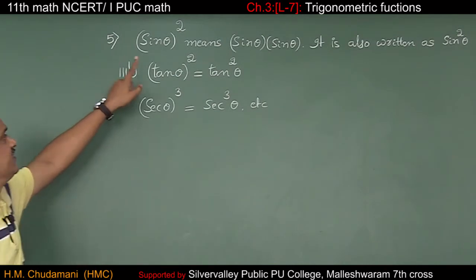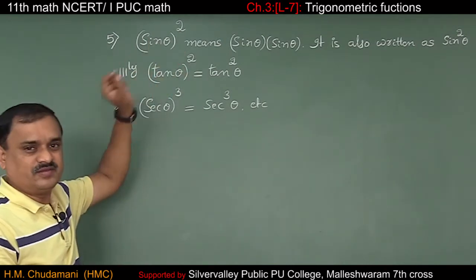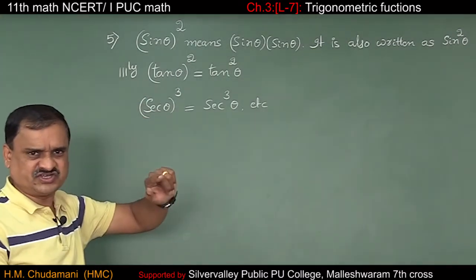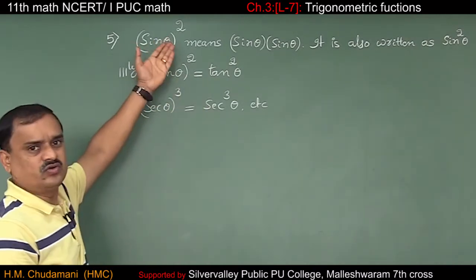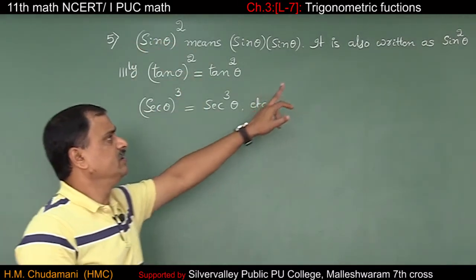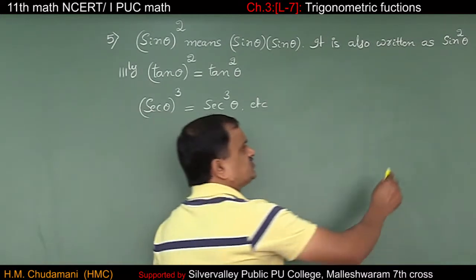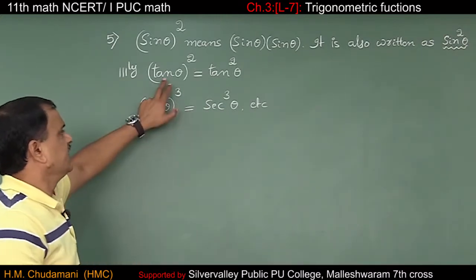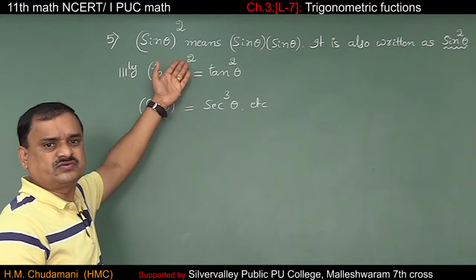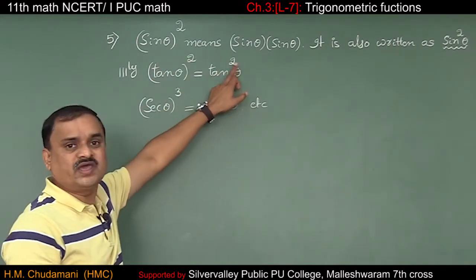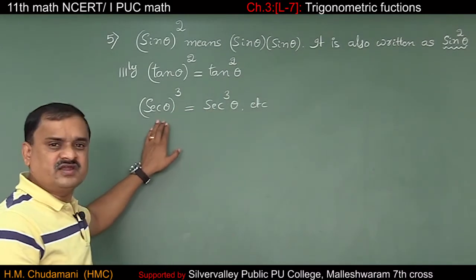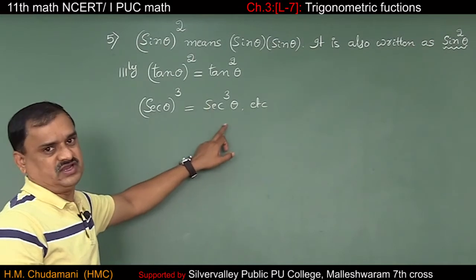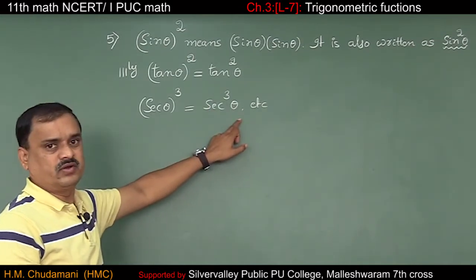Note number 5: sin θ whole square means sin θ × sin θ. It is also written as sin²θ. Similarly, tan θ whole square can be written as tan²θ, and secant θ whole cube is sec³θ, and so on.